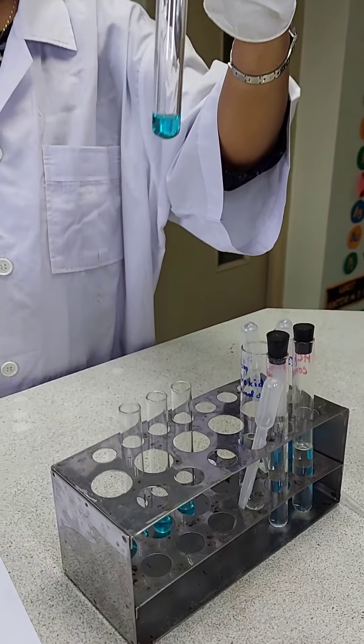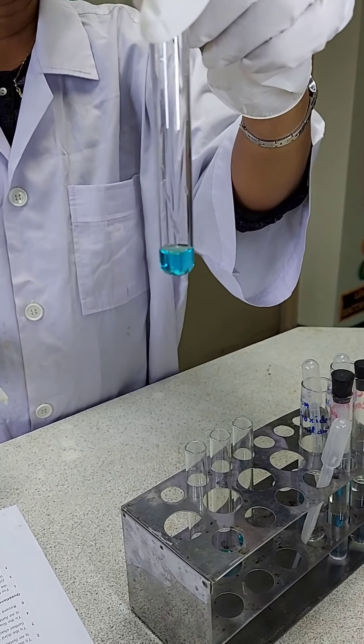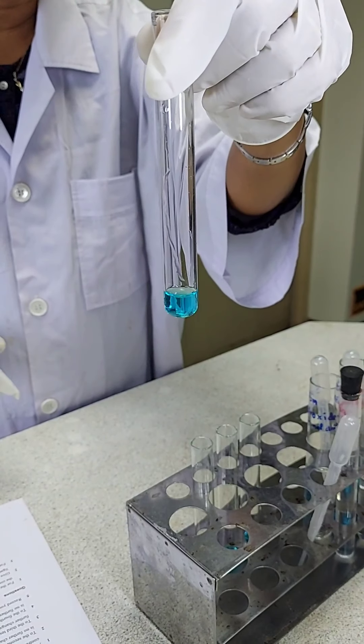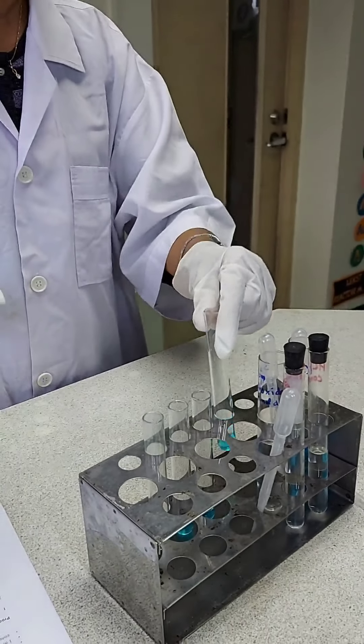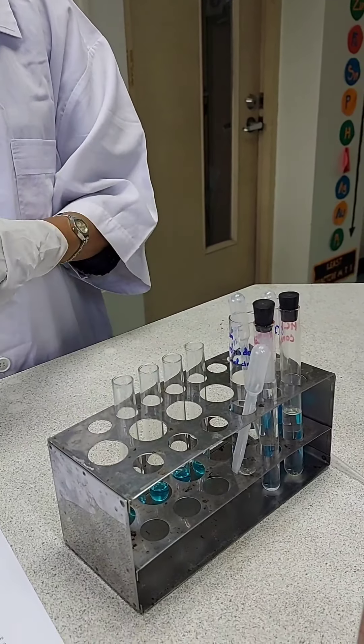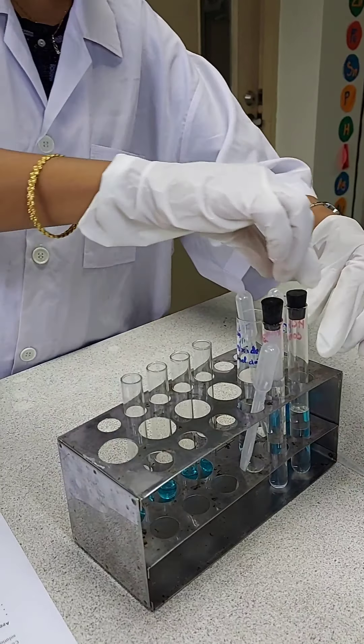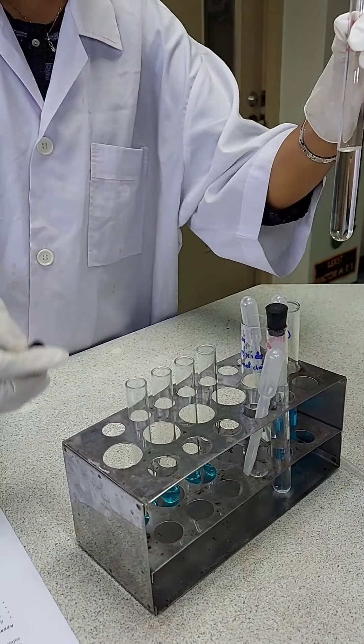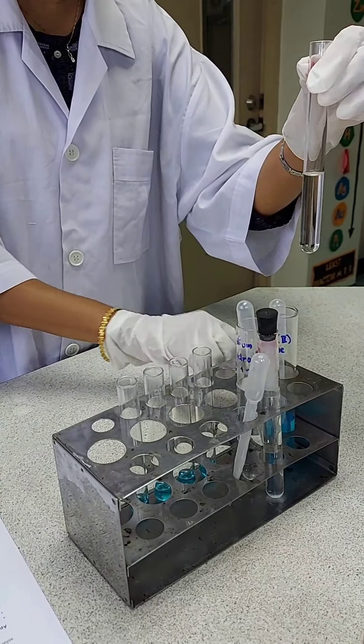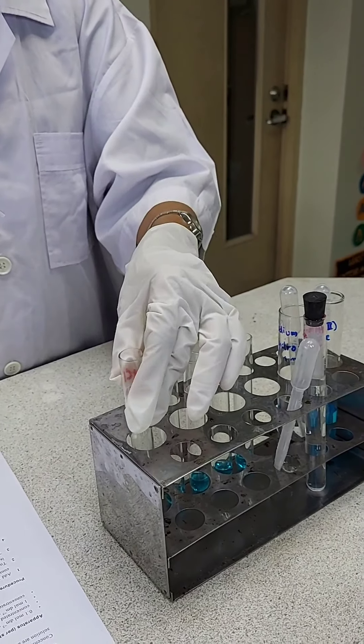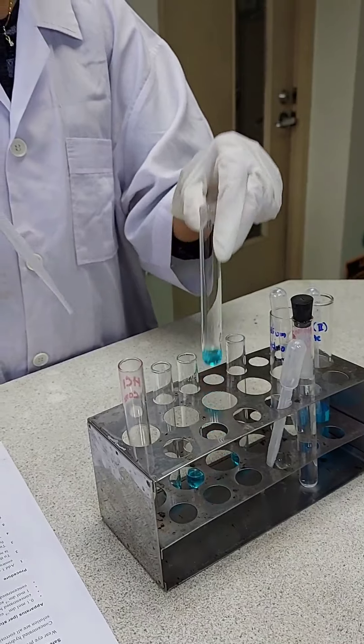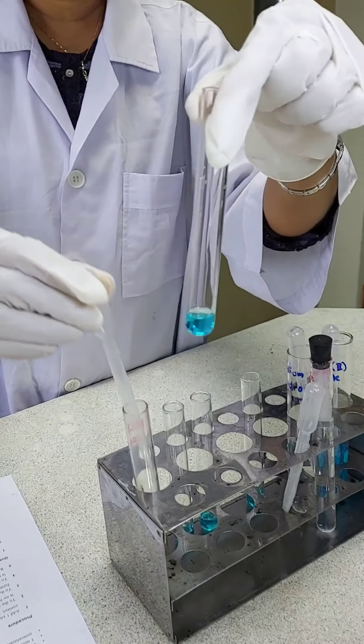The first test tube we'll keep as a control. We'll add the concentrated hydrochloric acid drop by drop into the second test tube till there is no change in color. Make close observation here.